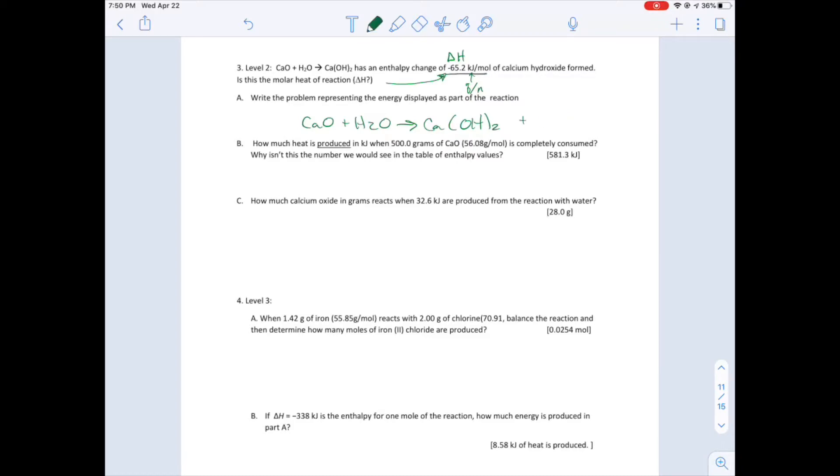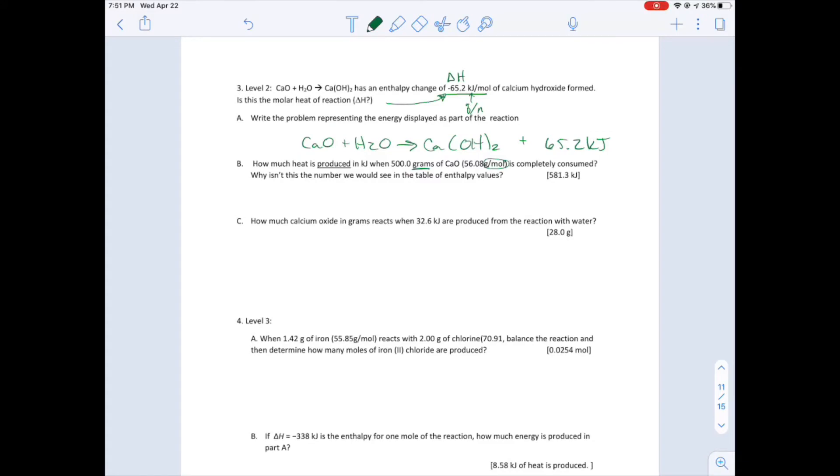How much heat is produced? You want to say 65.2 kilojoules is what's produced. So how much heat is produced in kilojoules? This is what they're wanting us to find. They're giving us 500 grams, and notice that it would be grams per mole. So kilojoules equals 500.0 grams, and then we have 56.08 grams in one mole. And what is this moles of? This is CaO. We need to make sure we do not drop our labels.